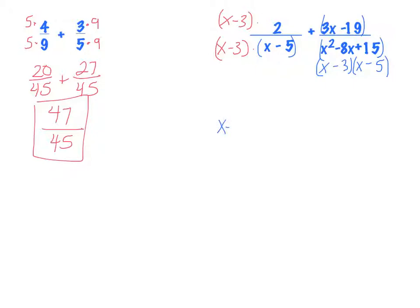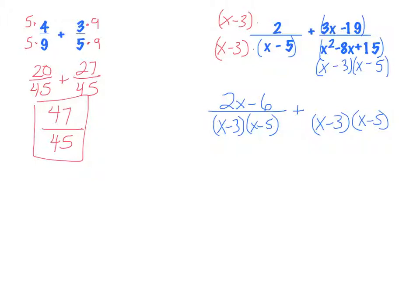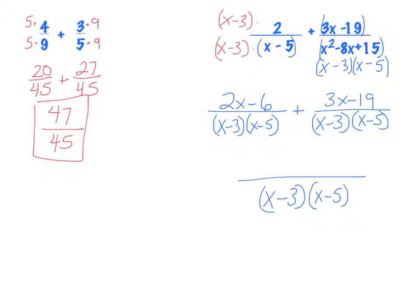With the common denominator of x minus 3 times x minus 5, I distribute the 2 on top of the first fraction to get 2x minus 6. The second fraction already has the common denominator, so I leave it: 3x minus 19. Once you have the common denominator, merge the fractions together, write the common denominator, and work with the numerator. It's a plus sign so I'm just adding everything.